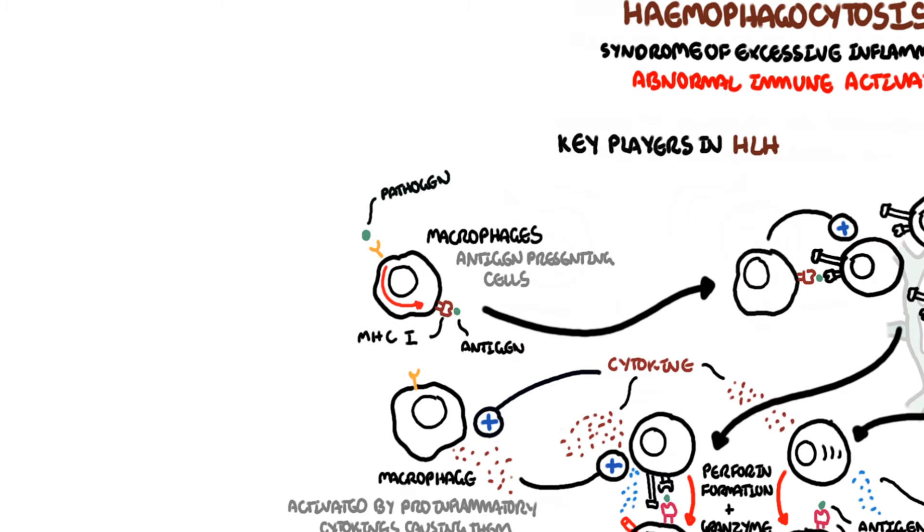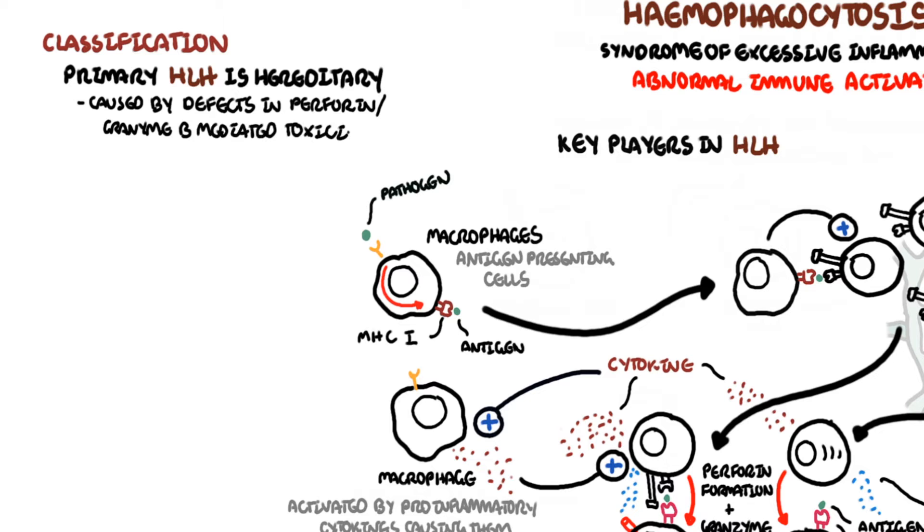Hemophagocytic lymphohistiocytosis can be classified as primary or secondary. Primary hemophagocytic lymphohistiocytosis is hereditary and caused by defects in perforin or granzyme-b-mediated toxicity.